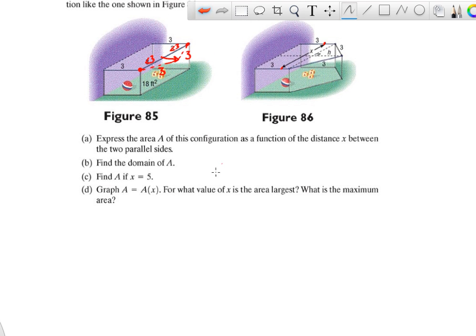So, express the area of this configuration as a function of the distance x. So x is the distance between the two parallel sides. Okay. So how do we do that? Well, let's first see what we have. So in A, we know that the area is a rectangle right there. So we have the area of a rectangle. And then we have the area of a triangle over here. So we need to add those two. The area of the rectangle, I know the area of the rectangle is 3 times x. It's base times height. So 3 times x. So that's good.